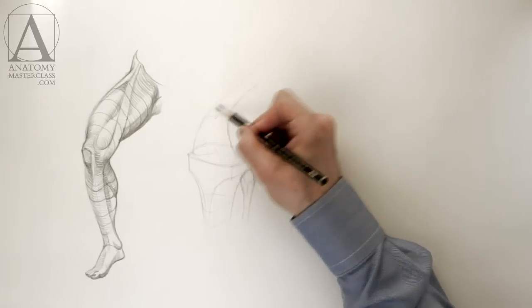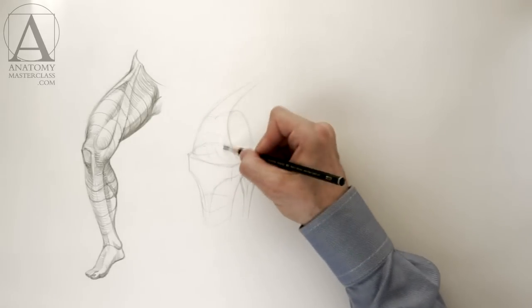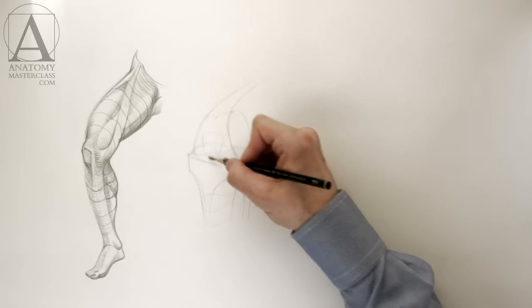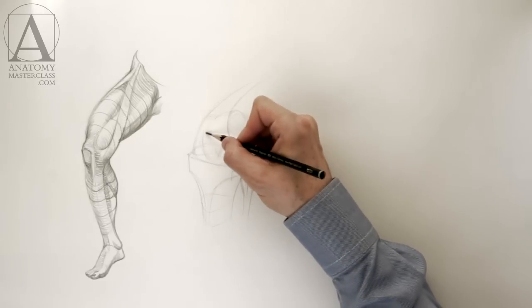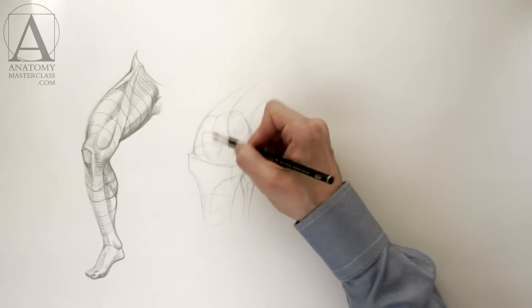Two condyles of the femur can be simplified as a cylindrical shape. This cylindrical shape, in combination with the surface of the upper edge of the shin bone, makes the hinge-like joint.